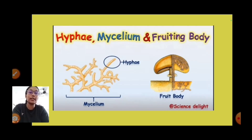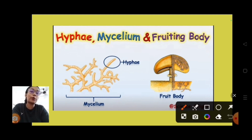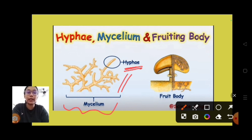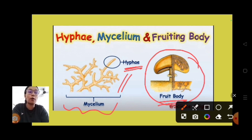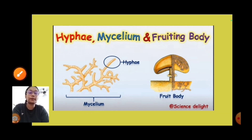Here it is clearly shown that one particular segment is called hyphae, and all the segments clubbed together to form a network-like structure is called mycelium. All the mycelium clubbed together forms the fruiting body. You can see the network of mycelium and the fruiting bodies in this diagram.